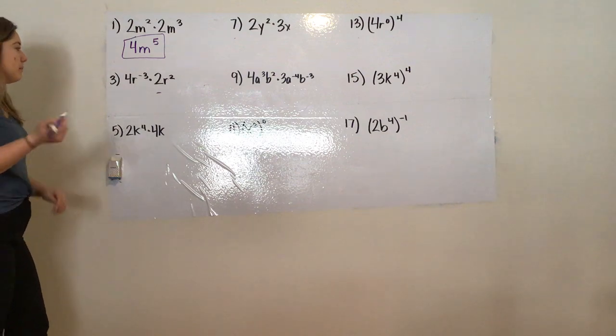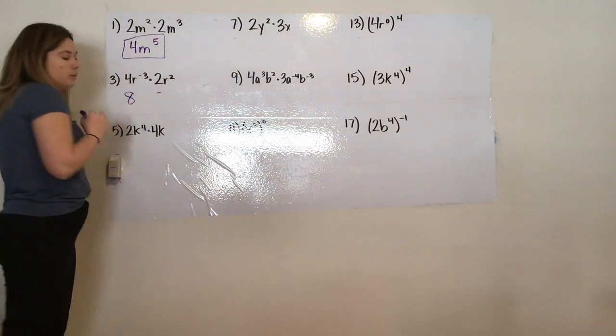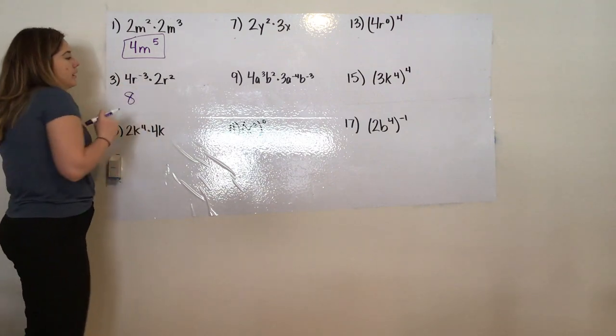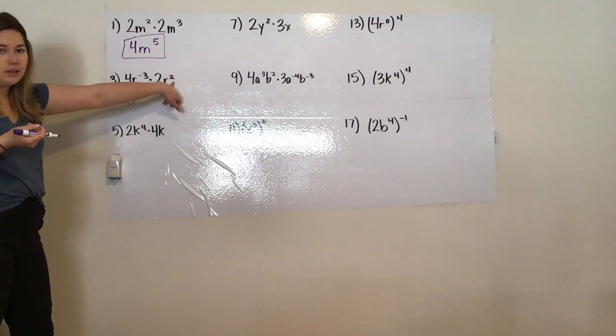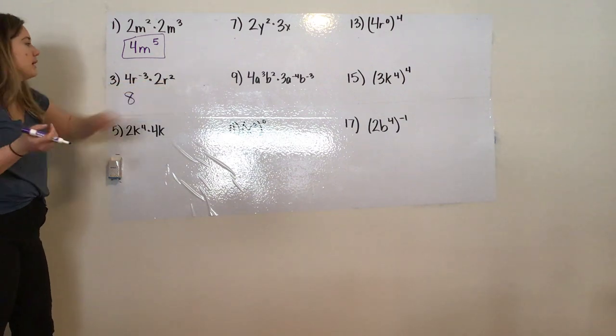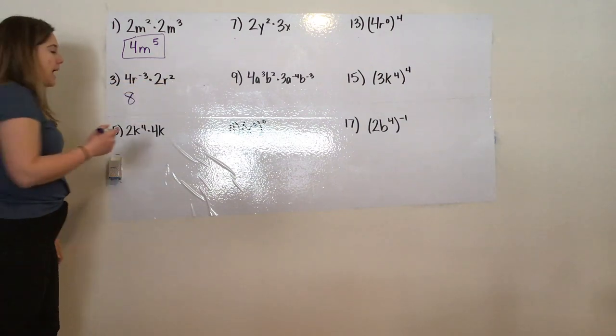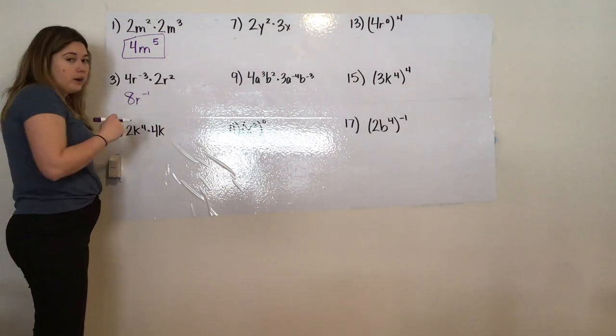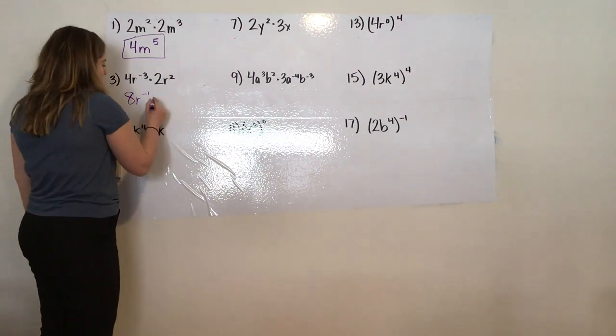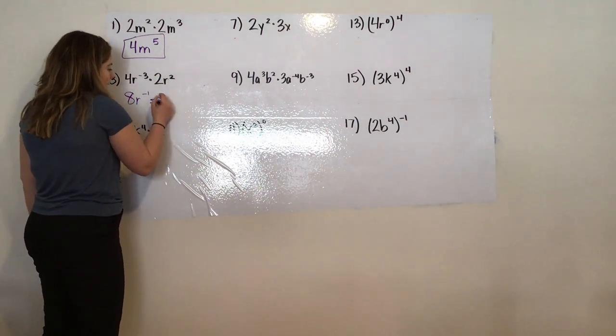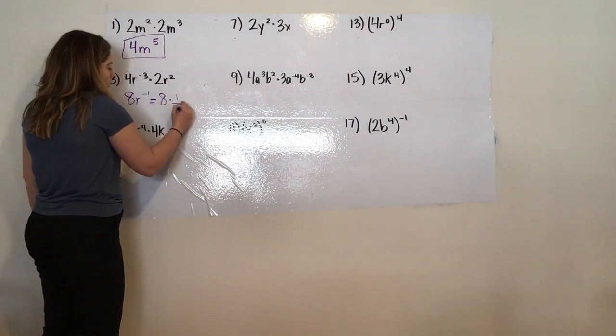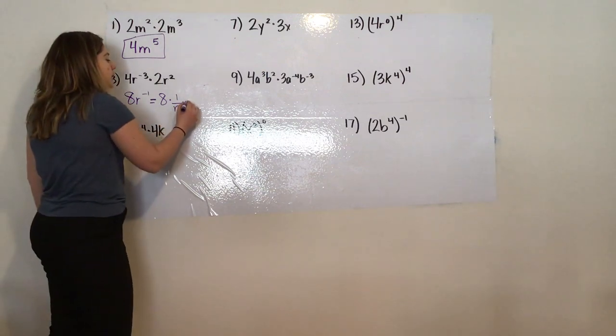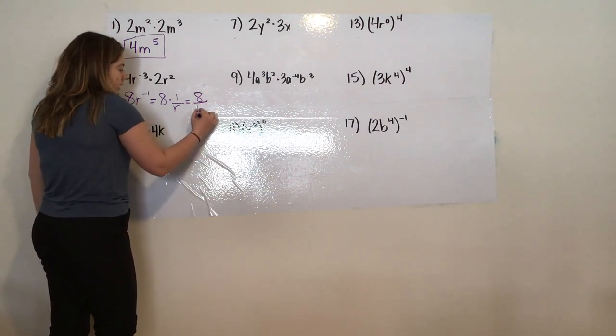Number 3, I'm going to treat it as such, which is 8. Then r to the power of negative 3 times r to the power of 2. Remember we're adding the powers, which gives us r to the negative 1. I only want exponents in positive form, so this becomes 8 times 1 over r, because r to the power of 1 is just r, which is simplified to 8 over r.